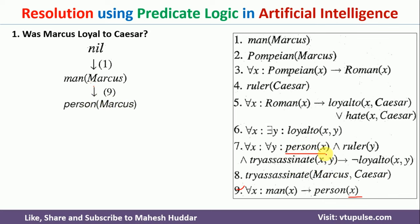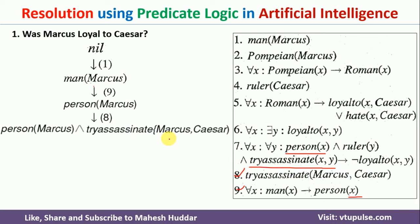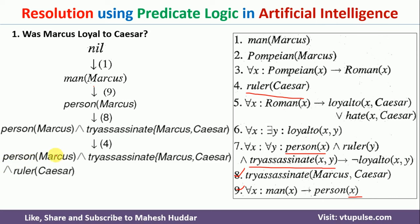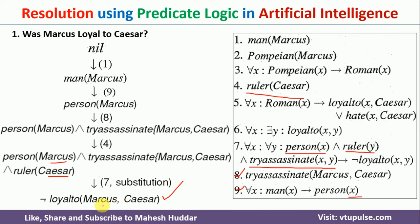Now we will try to get tryAssassinate(x, y). The 8th premise already tells us that Marcus is trying to assassinate Caesar. Similarly, we already know that Caesar is a ruler from the 4th premise. So we now have: person(Marcus), ruler(Caesar), and tryAssassinate(Marcus, Caesar) — all three are available. Since all three are satisfied, we can conclude that Marcus is not loyal to Caesar. That is the answer for the first question.